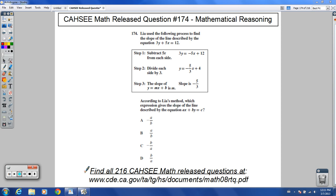Welcome to release question 174 for CAHSEE Math. It says, Leah used the following process to find the slope of the line described by the equation 3y plus 5x equals 12.